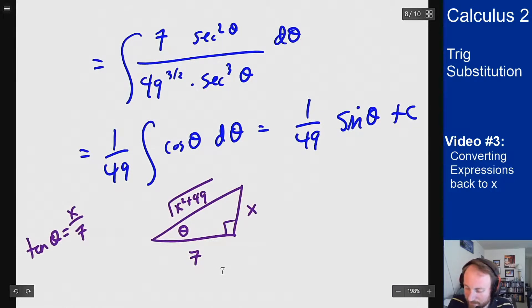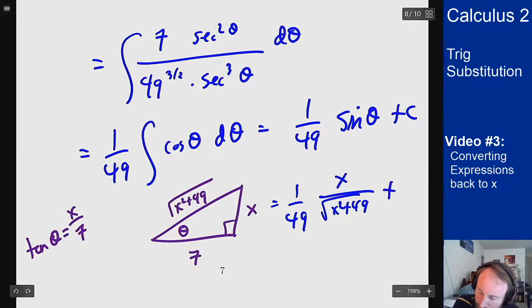And now I can finish my answer. So you actually get 1 over 49 sine of theta, which is opposite over hypotenuse, x over root x squared plus 49 plus c.